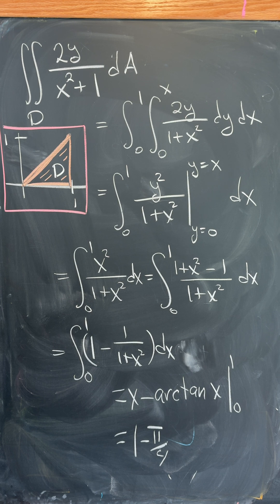where D is this triangular region right here bound by the x-axis, the line x equals 1 and y equals x.